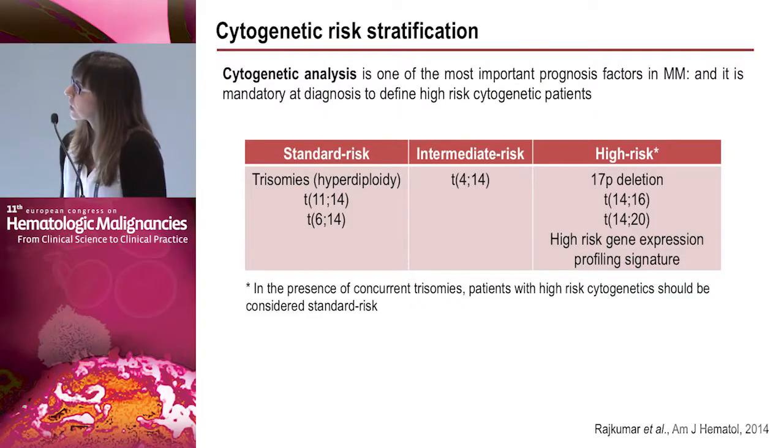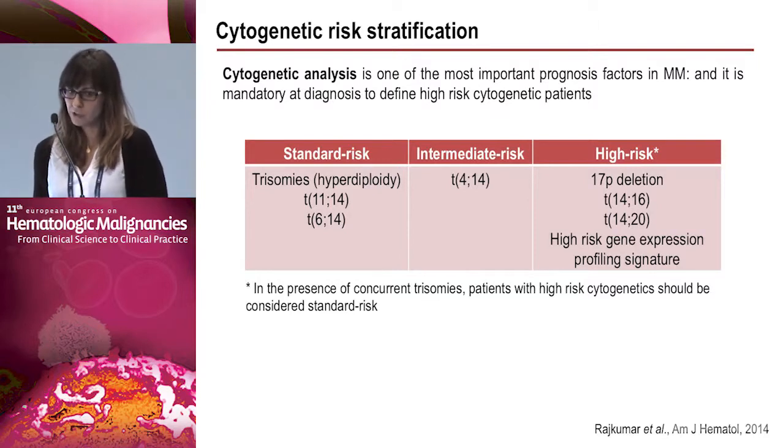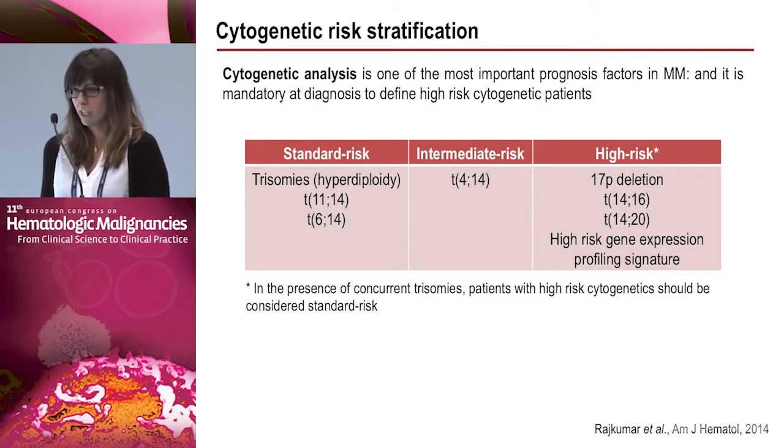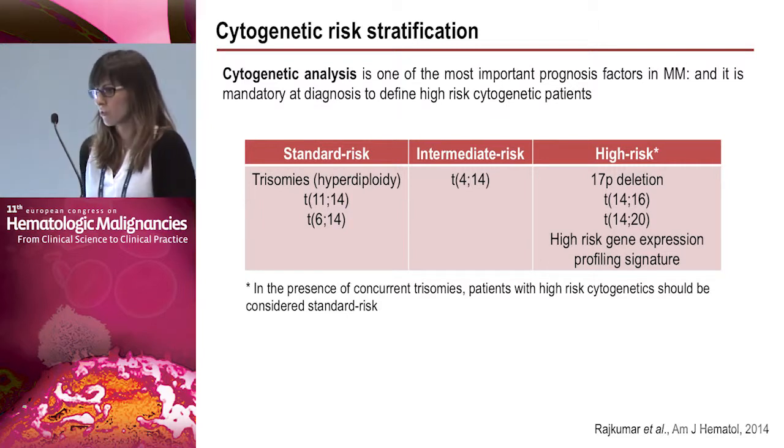Cytogenetic analysis is one of the most important prognostic factors in multiple myeloma, and it is mandatory at diagnosis to define cytogenetic risk. We can define three risk categories: standard risk includes patients with trisomies (the hyperdiploid group) and t(11;14) and t(6;14); intermediate risk includes t(4;14); and high risk includes 17p deletion, t(14;16), and t(14;20).